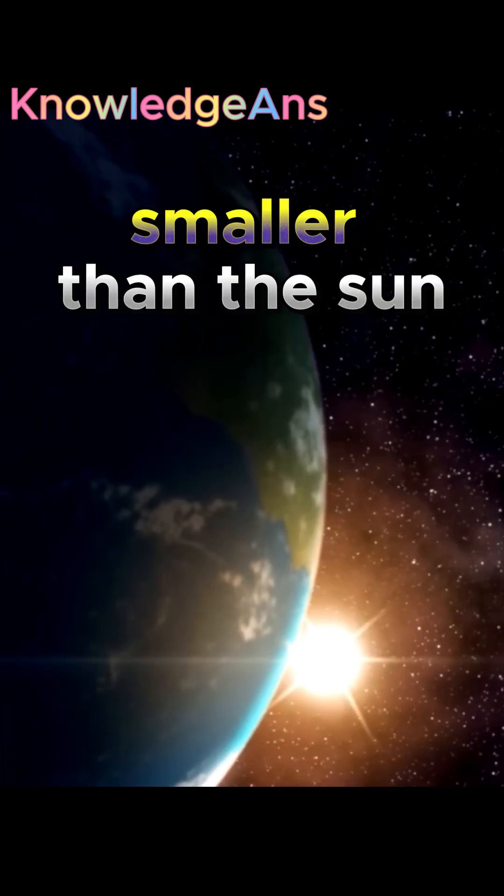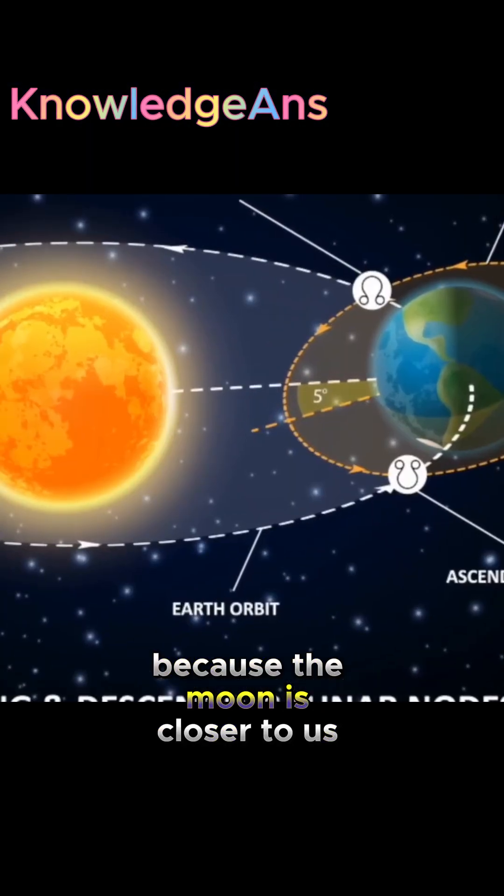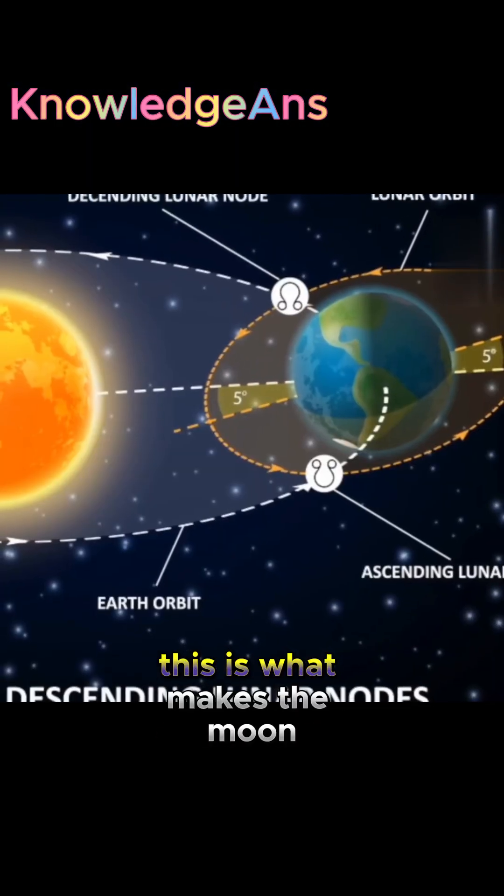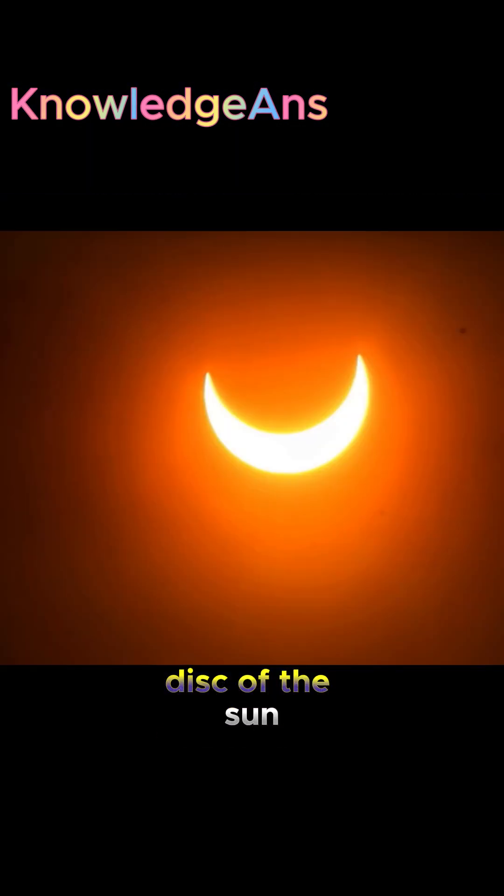Although the Moon is much smaller than the Sun, they appear about the same size because the Moon is closer to us than the Sun. This is what makes the Moon able to completely hide the disk of the Sun.